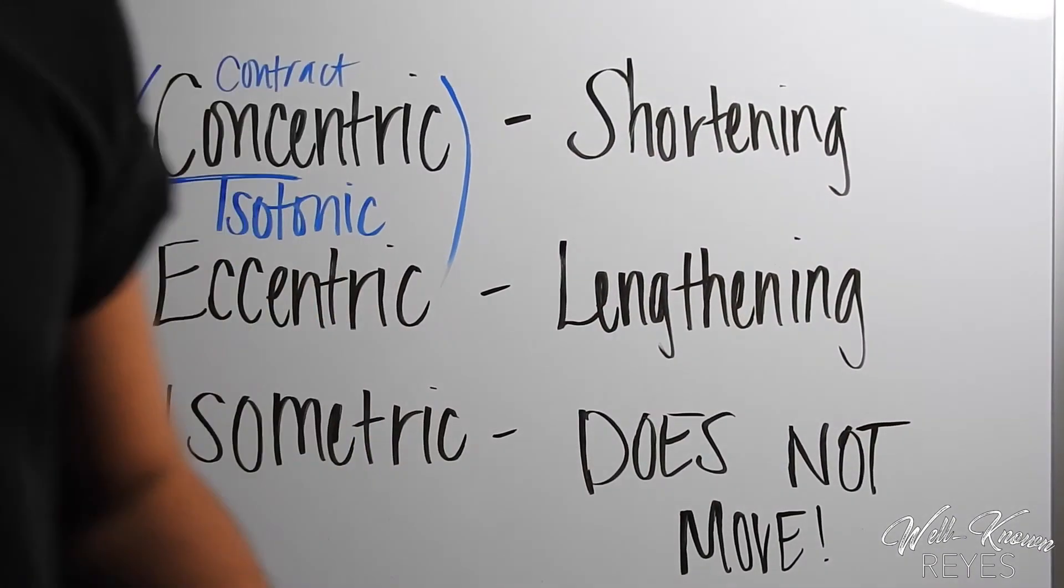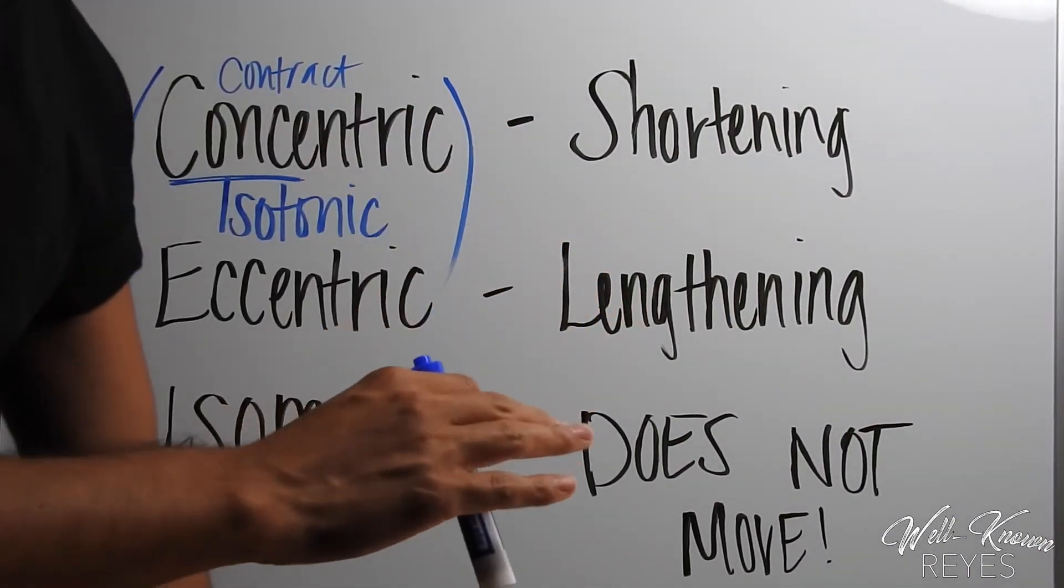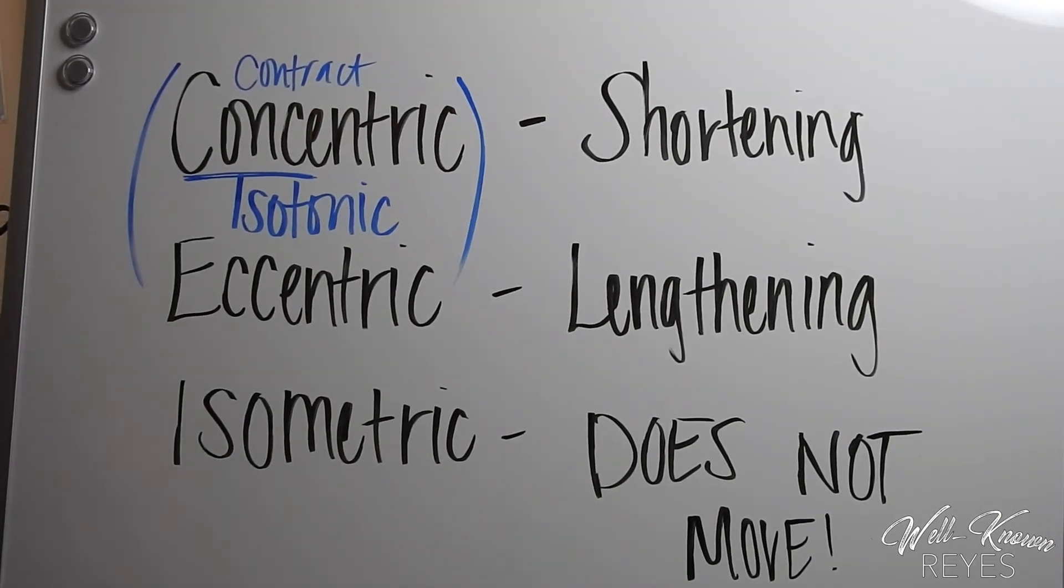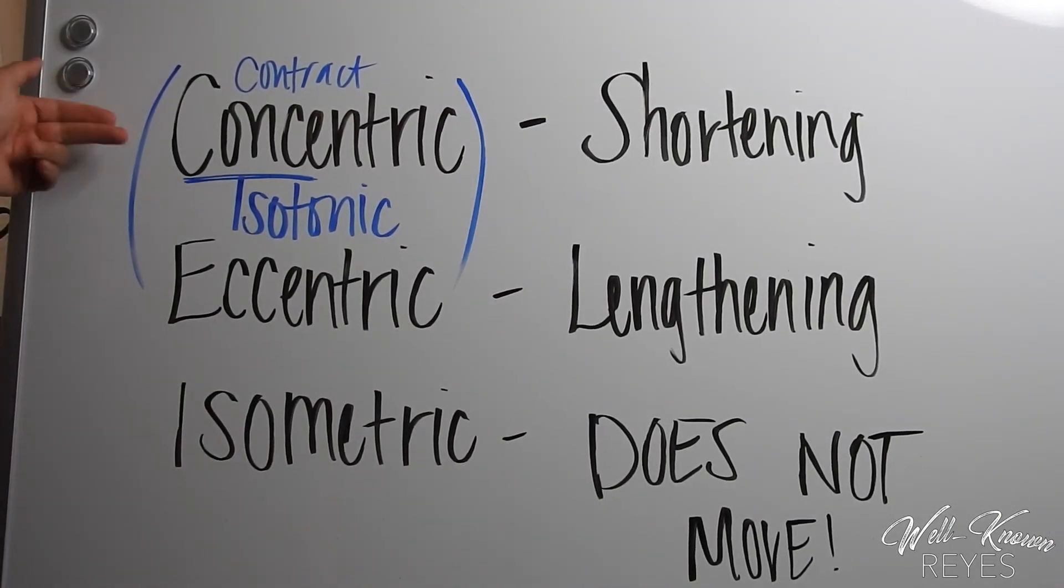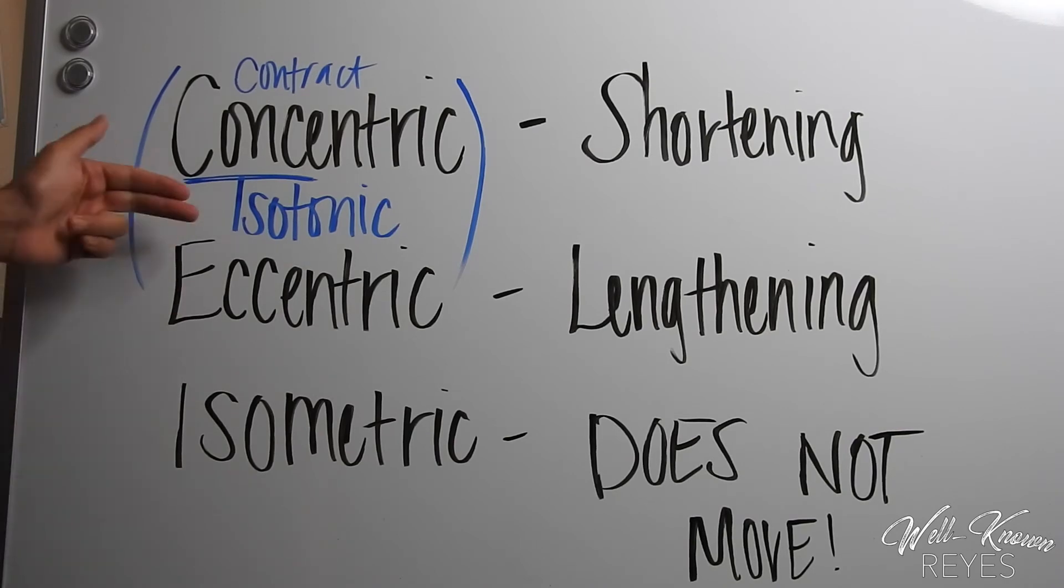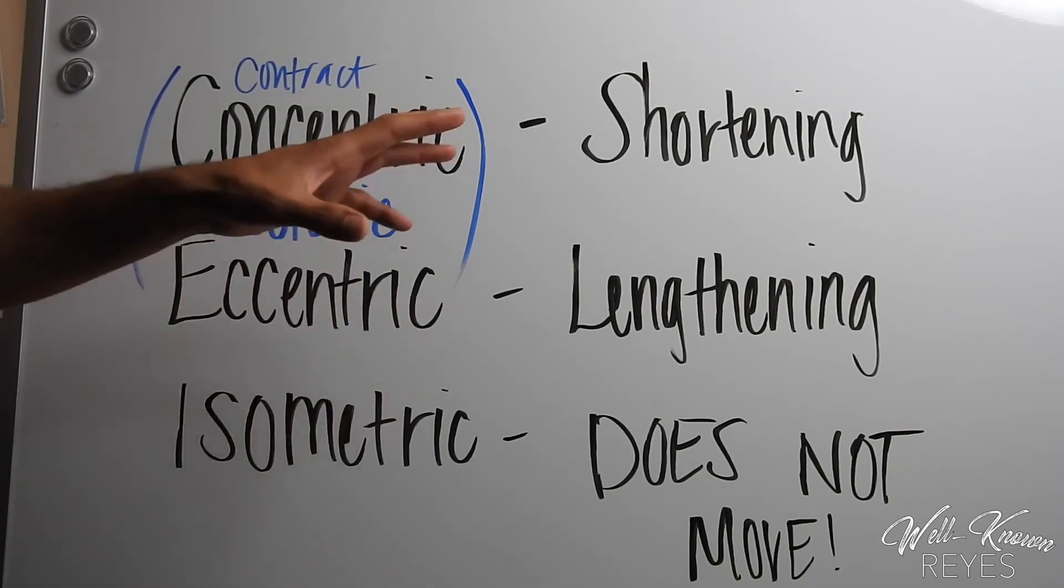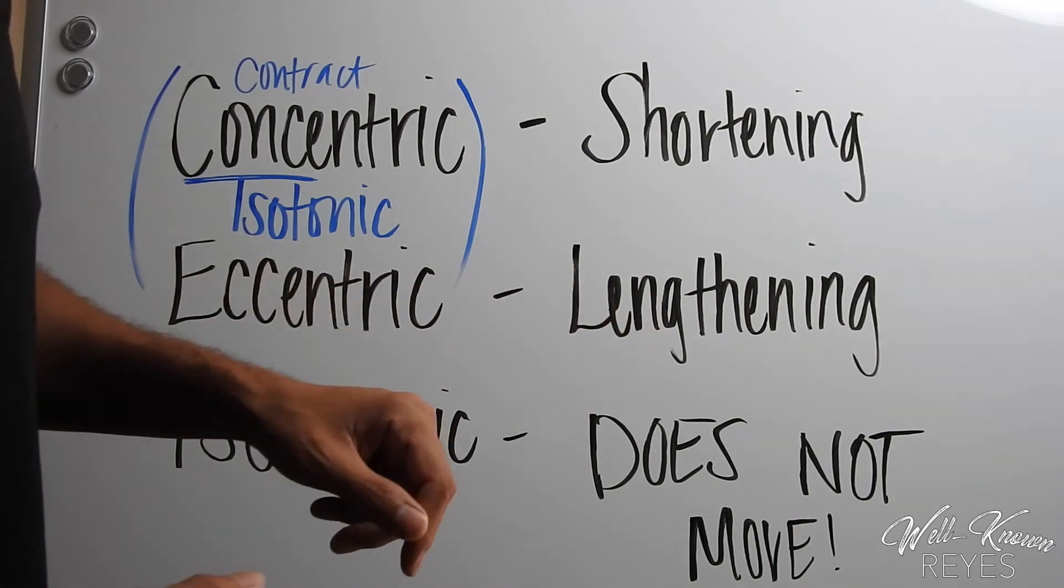So hopefully this helps you. It's just a small foundation of what concentric, eccentric, isometric, and isotonic contractions are. If you still need help after this video understanding it, please leave me a comment.